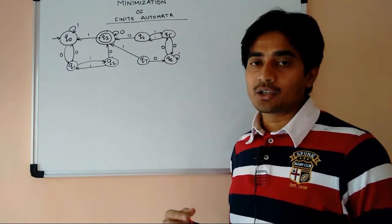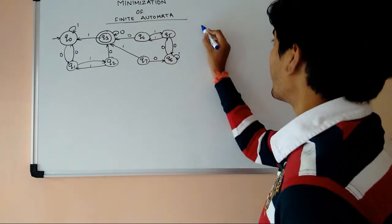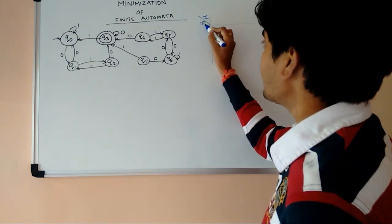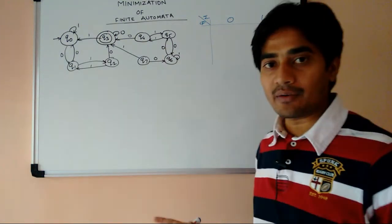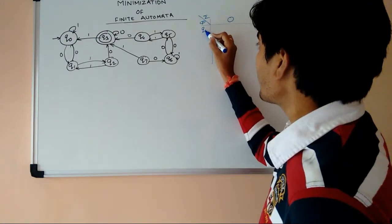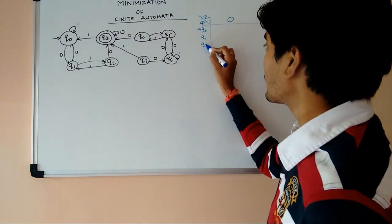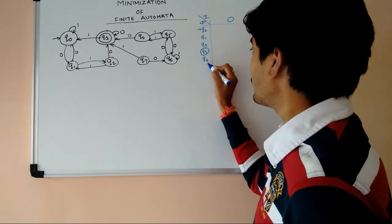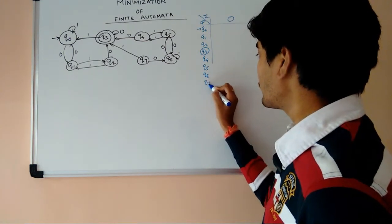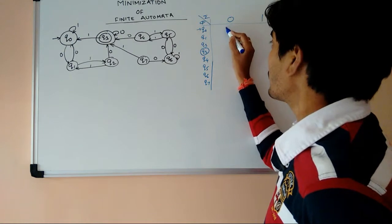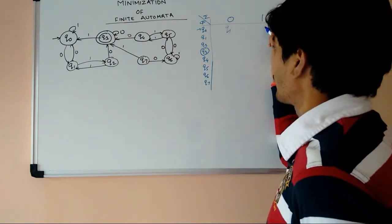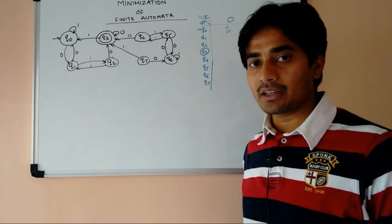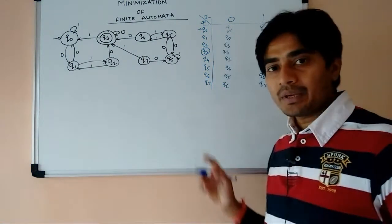This will help us to design the minimized automata. We have 0 and 1 as alphabets. The states are Q0 as the initial state, Q1, Q2, Q3 as the final state, Q4, Q5, Q6, and Q7. Q0 for 0 is going to Q1, and for 1 it is going to the same state. In this same fashion we will fill each entry, and in this way we completed the transition table.